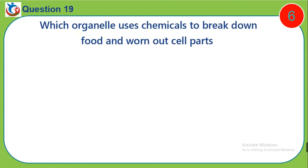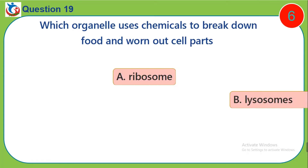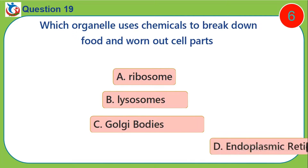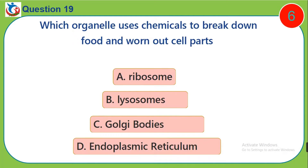Question 19. Which organelle uses chemicals to break down food and worn out cell parts? A. Ribosomes. B. Lysosomes. C. Golgi bodies. D. Endoplasmic reticulum.